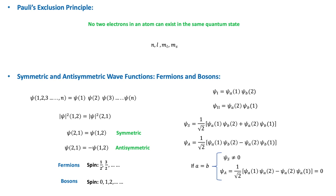The wave function that represents a situation where the particles are exchanged can be written in two ways: either the wave function remains unchanged, or it reverses sign when the particles are exchanged. Both of these options still fulfill the equation, because the wave function of the system is not itself a measurable quantity, so changing the sign of the wave function when the particles are exchanged is permitted. Wave functions that are not affected by the exchange of identical particles are said to be symmetric wave functions, and those that reverse sign when the exchange is made are said to be antisymmetric.